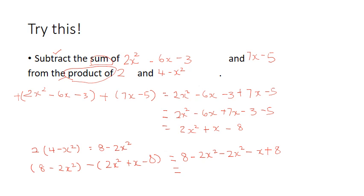From here, next step, we have to group the like terms together. So, we have minus 2x squared minus 2x squared minus x plus 8 plus 8. And now, minus 2x squared minus 2x squared, we have minus 4x squared minus x plus 16.